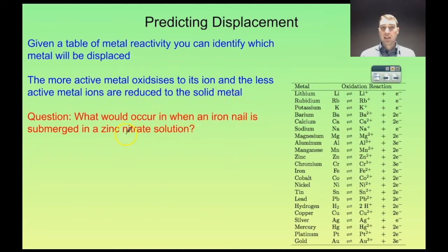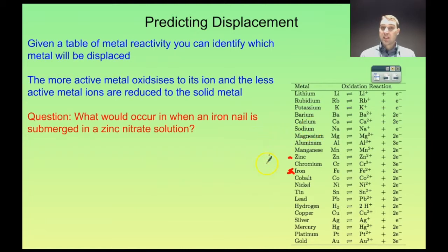So let's have a look: what would occur when an iron nail is submerged in a zinc nitrate solution? We'll look through our activity series. We have iron here and we have zinc here. In this case we're putting an iron nail — which is less active — into a solution of a more active metal. So what's going to happen? Nothing. The zinc placed in an iron solution we would see a reaction, but solid iron placed in a zinc solution means a less active metal is placed in a solution of a more active metal's ions. These ions are already oxidized, already really stable, so they're not going to go back spontaneously unless we put in energy.